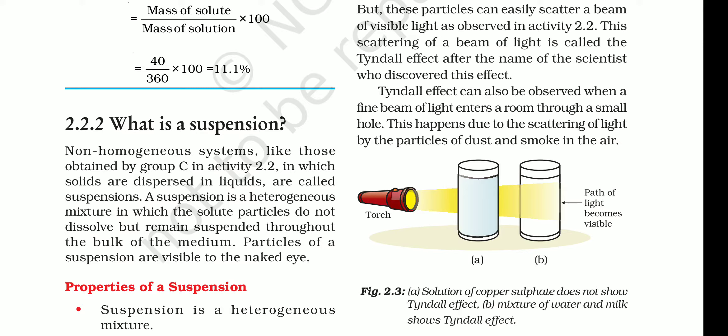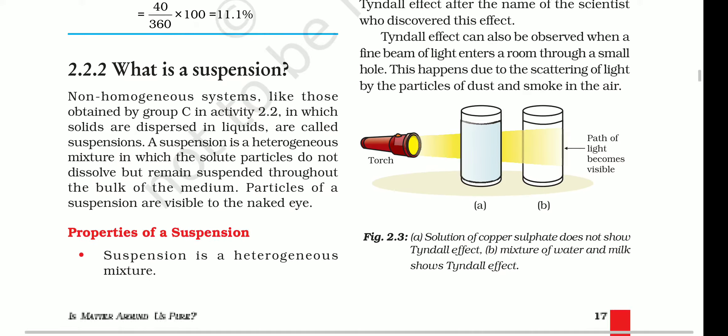Suspension is a heterogeneous mixture in which the two layers are clearly visible. We can say suspension is a heterogeneous mixture in which small particles of a solid do not dissolve, but remain suspended throughout the mass of the liquid.